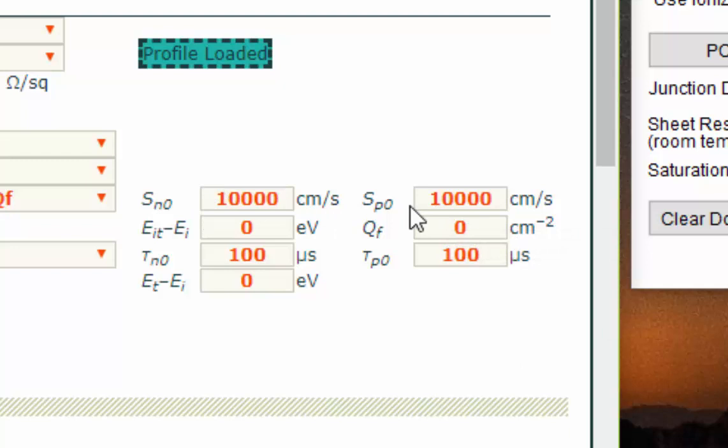After that, we must define other parameters related to this emitter. Sn0 and Sp0 denote the surface recombination velocities at the interface between the passivation and the emitter. So for this example, we're just going to set it at an arbitrary predefined value that we have chosen.